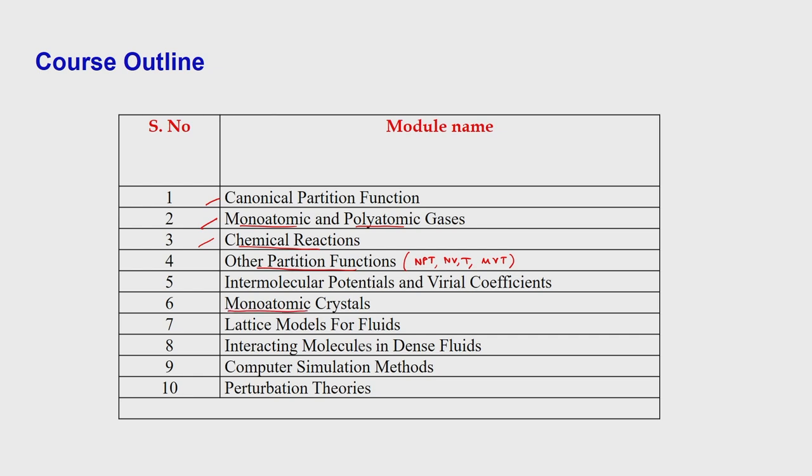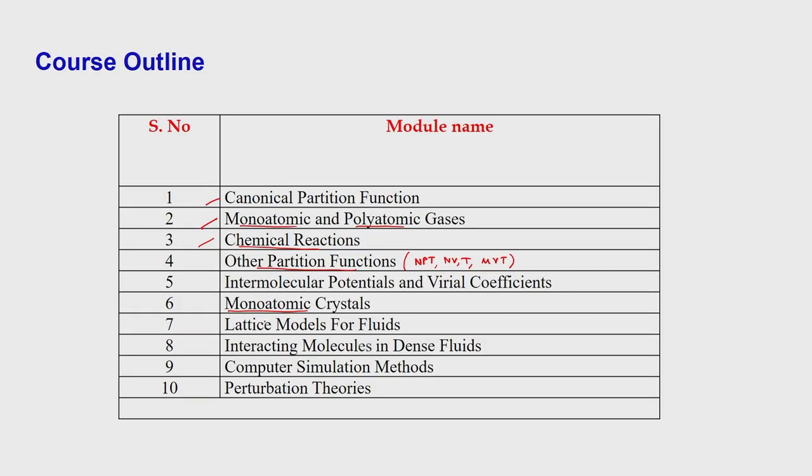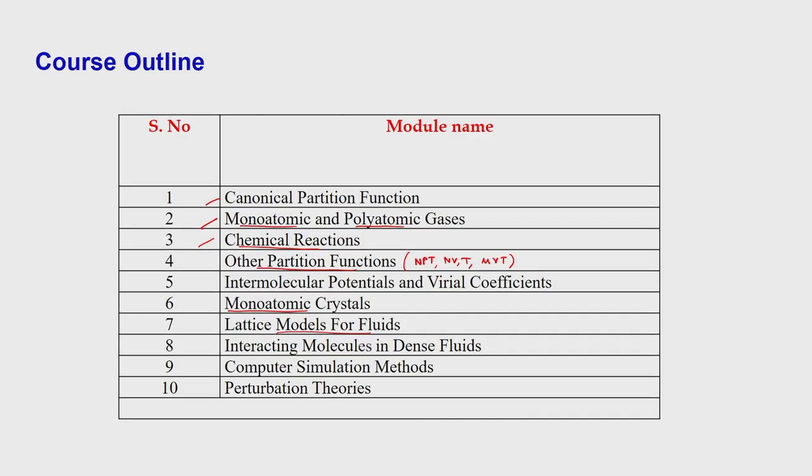We go to the solid part, discussing how the partition function can be used to determine properties for solids, taking the example of monoatomic crystals. Then we talk about lattice models for fluids and models such as the Flory-Huggins model in the case of polymeric systems. We then find interacting molecules in dense fluids. Then we talk about computer simulation methods, which are molecular dynamics and Monte Carlo simulation. These are very important, and you will have other NPTEL courses totally devoted to computer simulation methods, so I will not go into detail. Then finally, the perturbation theories.